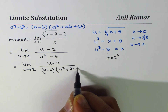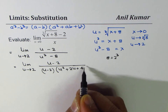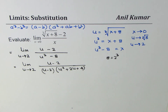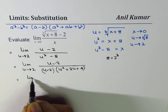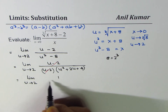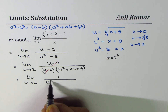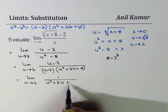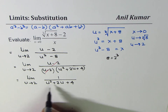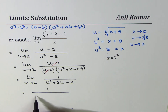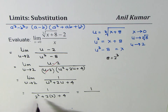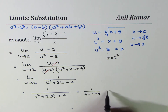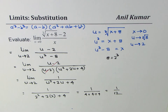The (u minus 2) terms cancel, so we have: limit as u approaches 2 of 1 over (u² + 2u + 4). Substituting u = 2, we get 1 over (2² + 2×2 + 4), which is 1 over (4 + 4 + 4), giving us 1 over 12.